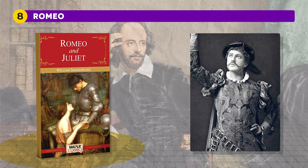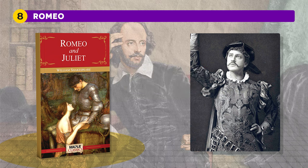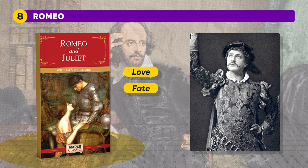And how can we forget Romeo? He is the tragic protagonist of Shakespeare's Romeo and Juliet. He is a young member of the Montague family, embroiled in a long-standing feud with the Capulet family of Verona. Romeo is depicted as a romantic and impulsive youth who falls deeply in love with Juliet, a member of the rival Capulet family, after meeting her at a masquerade ball. Despite the enmity between their families, Romeo and Juliet embark on a passionate and forbidden love affair, ultimately leading to their tragic demise. Throughout the play, Romeo's character transitions from a love-struck youth to a more mature individual, grappling with themes of love, fate, and the consequences of his own impulsive actions.